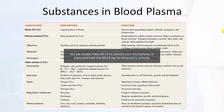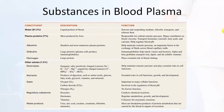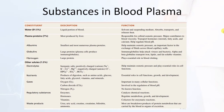Substances in blood plasma: Water is 91.5% — the liquid portion of blood — functioning as a solvent and suspending medium, absorbing, transporting, and releasing heat. Plasma proteins are 7%, mostly produced by the liver, responsible for colloid osmotic pressure, major contributors to blood viscosity, and transport hormones, steroids, fatty acids, and calcium, while helping regulate blood pH.